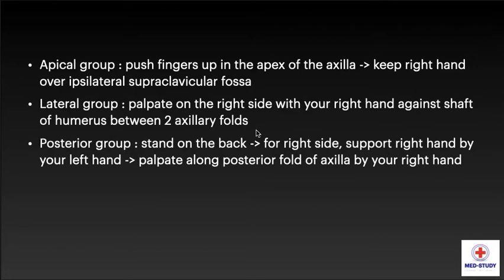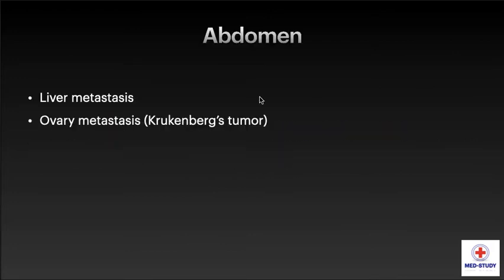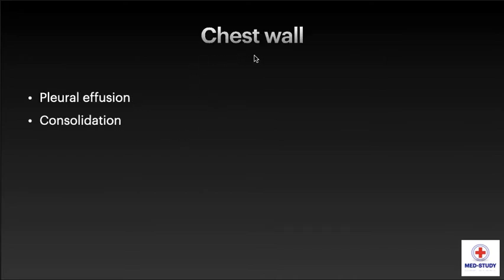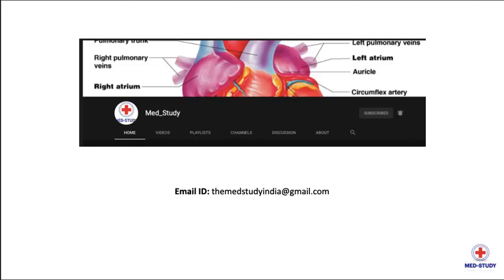For the lateral group, palpate on the right side with your hand against the shaft of humerus between the two axillary folds. For the posterior group, stand behind the patient, support the right hand with your left hand, and palpate along the posterior fold of axilla with your right hand. For systemic examination, palpate the abdomen for liver metastasis and ovary metastasis as in Krukenberg's tumour. Examine the chest wall for pleural effusion and consolidation, and look for any bone tenderness denoting signs of metastasis.